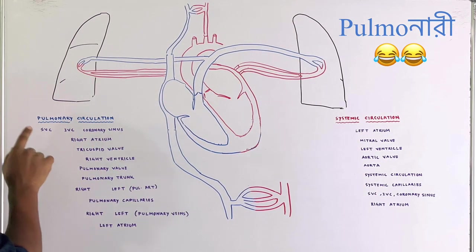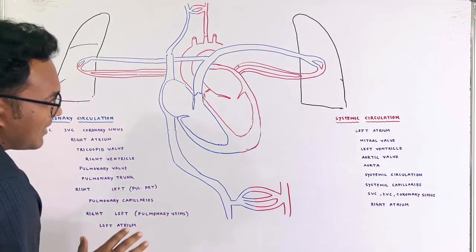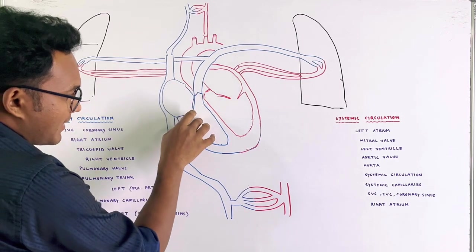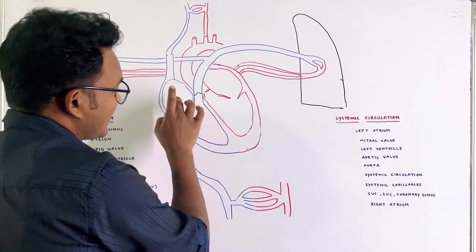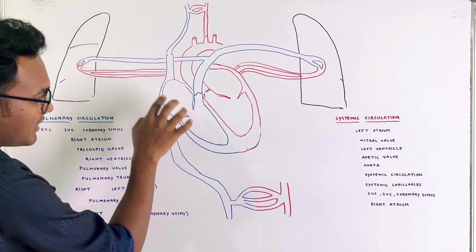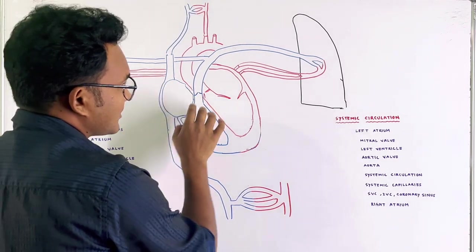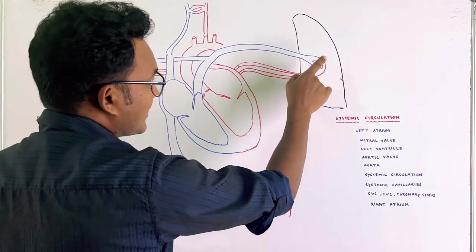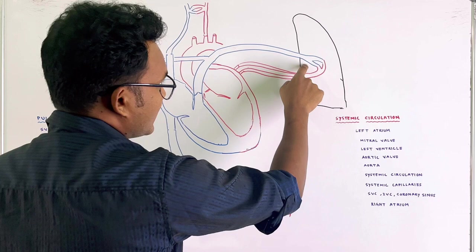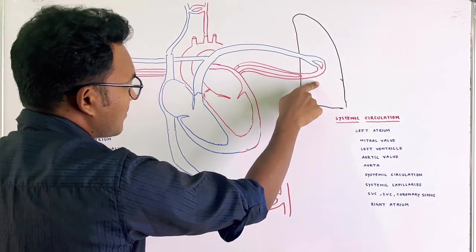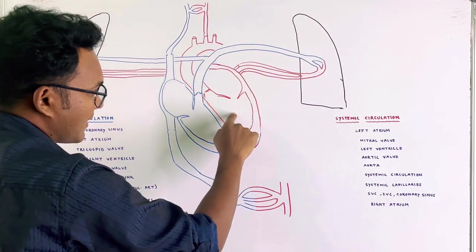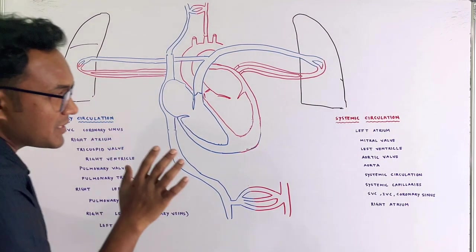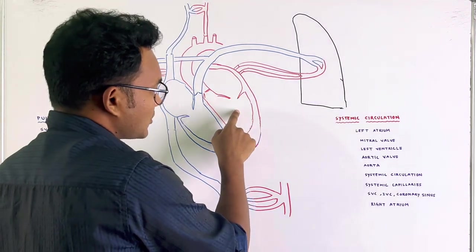What is Pulmonary Circulation? Pulmonary Circulation involves the right side of the heart. Blood comes from the right side of the heart and goes to the lungs. This is Pulmonary Circulation. The systemic circulation involves the left side with oxygenated blood.